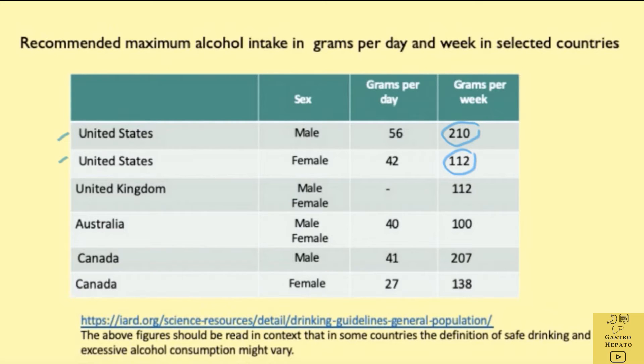In the United Kingdom, the threshold is put at a lower level of 112 grams per week. In Australia, it is also around the same at 100 grams.